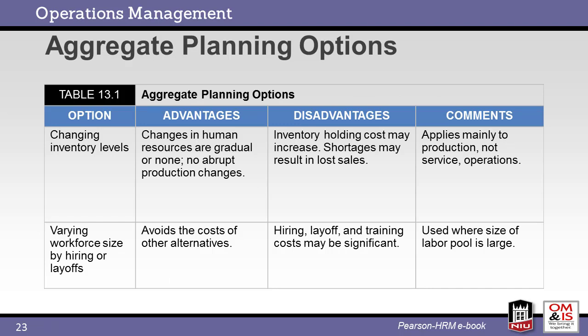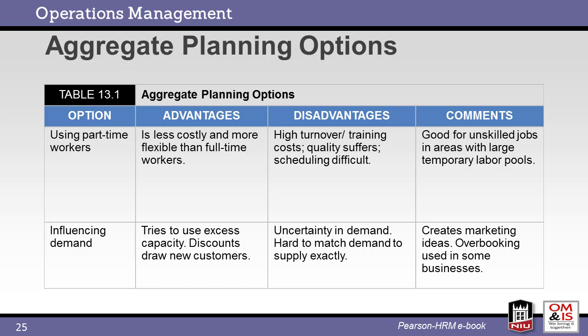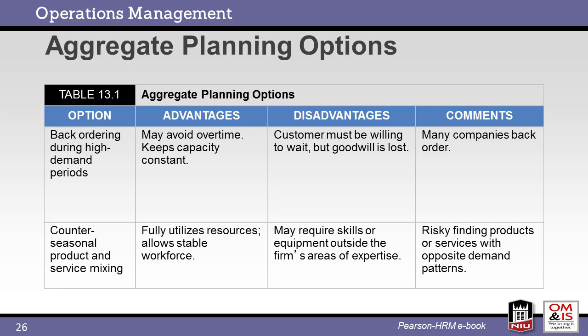This table summarizes the aggregate planning options described, covering inventory and workforce options. The aggregate planning options table continues with the options of varying production rates and adding subcontracting, as well as the use of part-time workers and influencing demand. Finally, the table considers back-ordering during high-demand periods and counter-seasonal product and service mixing — think bicycles and snowboards.